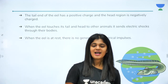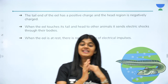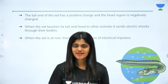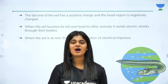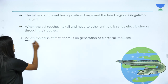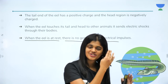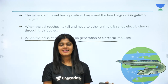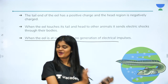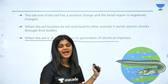The body of an electric eel is similar to that of a battery. The tail end has a positive charge and the head region has a negative charge. When the eel touches its tail and head to other animals, electric shocks are sent through their bodies. When the eel is at rest, there is no generation of electric pulses. Whenever it starts moving, there will be positive charge on the tail and negative charge on the head, and whenever it touches any other animal, the electric shock is sent to them. This is an interesting fact about electric eels.